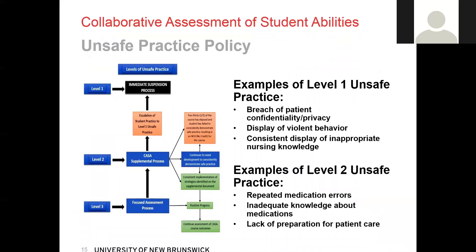The unsafe practice policy was designed to help map out what to do in the case of observed unsafe practice. If you observe level 3 unsafe practice, you will meet with a student to discuss your concerns, and as long as they progress, you can continue their assessment as usual. If the student does not progress, the level 3 unsafe practice will be escalated to a level 2. Once a student is at level 2, it automatically starts the supplemental process — this is when you will create a supplemental within their CASA and follow the directions within it.